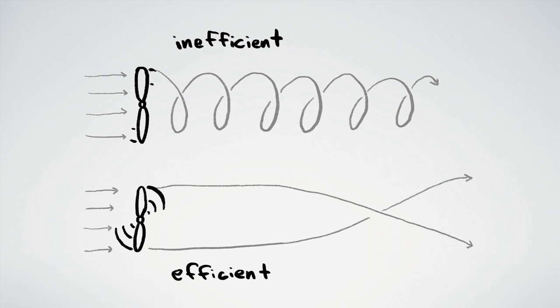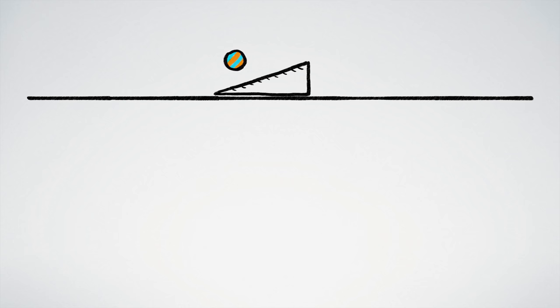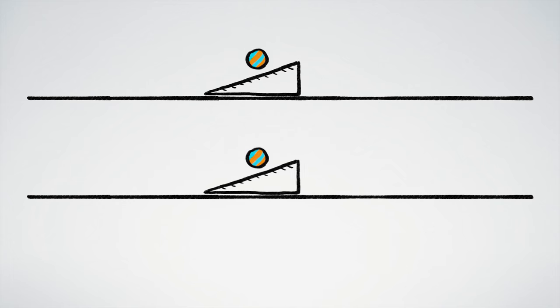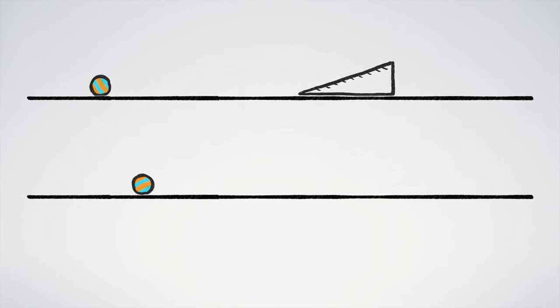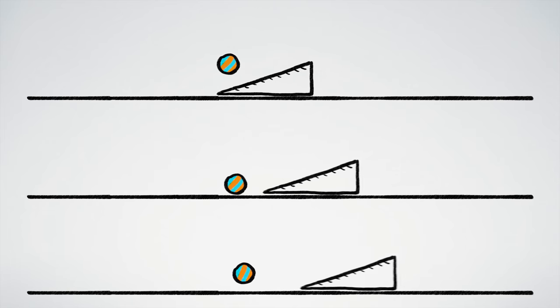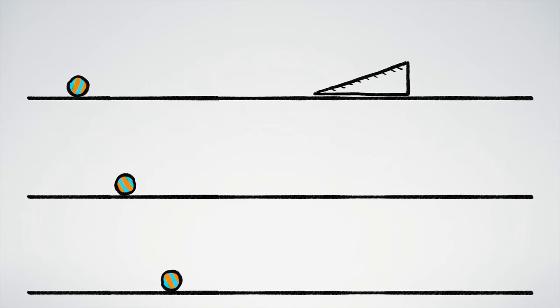This might seem a little counterintuitive, but a similar thing happens when a ball falls and bounces off of an angled block. If the block isn't moving, conservation of momentum and energy mean that the ball bounces to the left and the block gets pushed right. But if the block starts off moving to the right, it's able to absorb more of the ball's energy when it accelerates. The faster the block moves, the more energy it extracts from the ball. You can see this because the ball moves less each time.